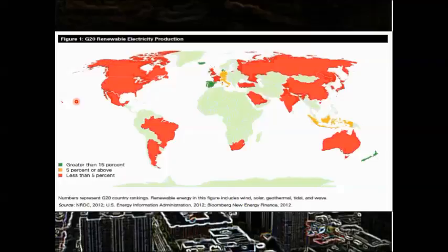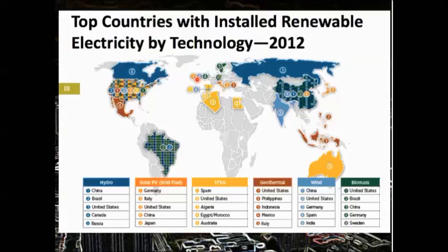Here is another map to give you an idea of renewable electricity production. Notice that most of the planet is sitting under less than 5% renewable electricity — most of the measurable ones. A few are 5% or above, predominantly in Europe. And some, very few, are greater than 15% — mostly in Europe. But greater than 15% — is that really our standard? I think it can be a lot higher than that if we really figure out how to do it.